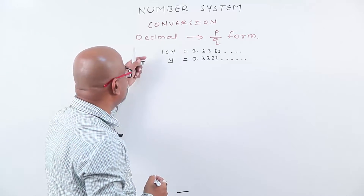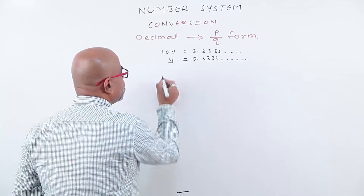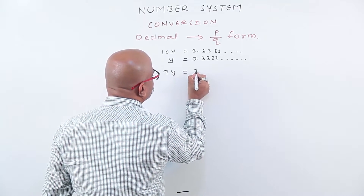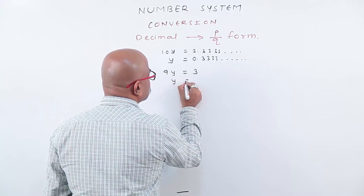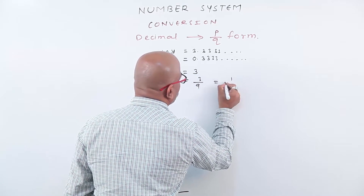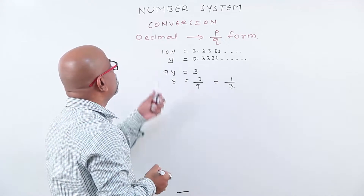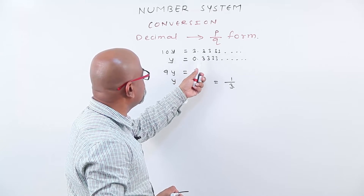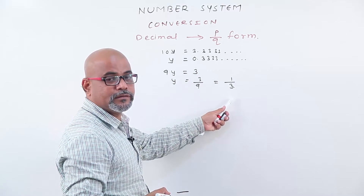Now, subtracting this second equation from first, we get 9y equals to three. That is y equals to three by nine, which is one by three. So the given number point three three three three equals to one by three.